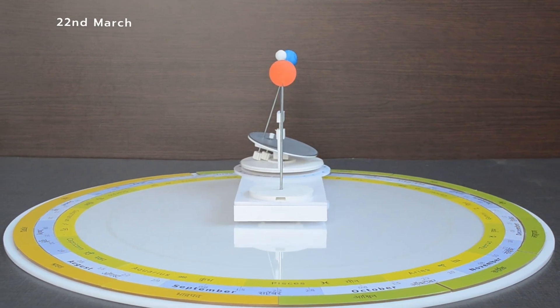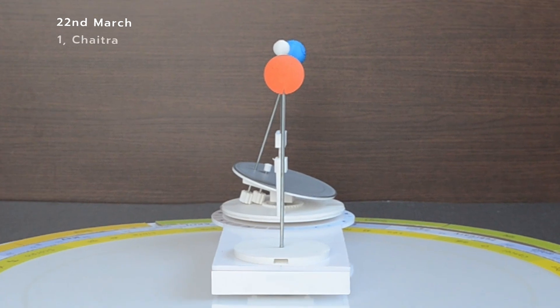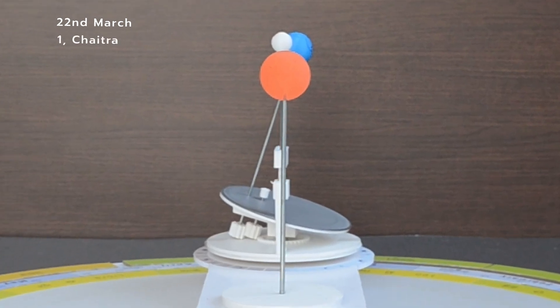On 22nd March, which is the start of Chaitra month, both hemispheres receive equal amount of light. Equinox.